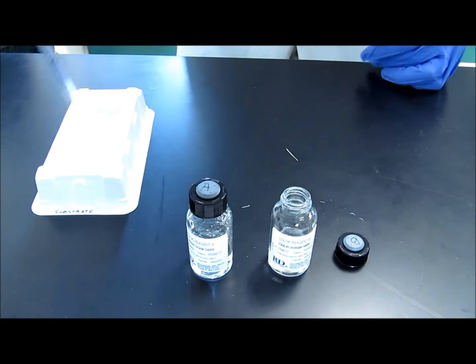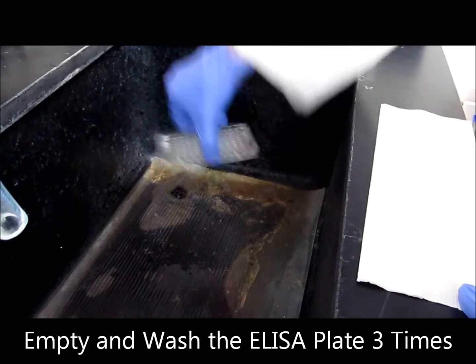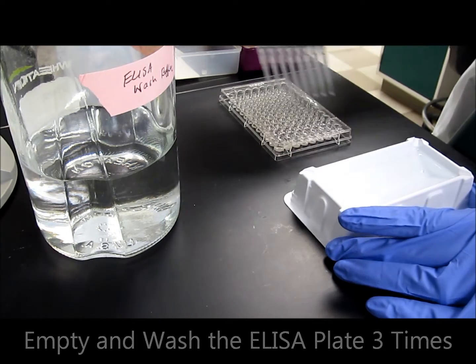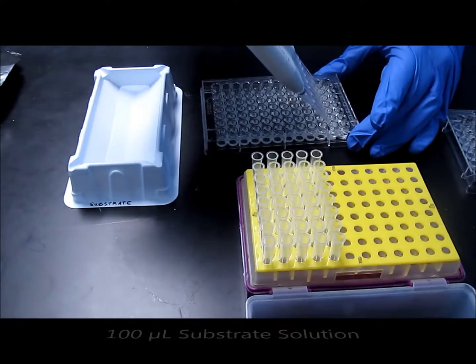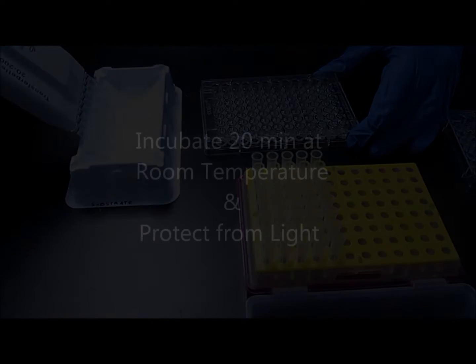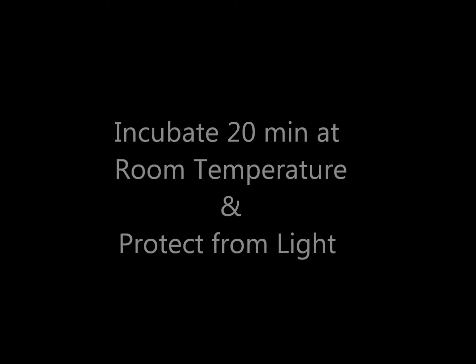Once the 20-minute incubation time is over, wash the ELISA plate three times in order to remove any unbound strep HRP. Add 100 microliters of the substrate solution to each well of the plate. Incubate the plate for 20 minutes at room temperature and protect the plate from light.